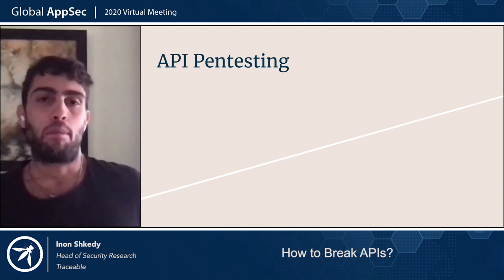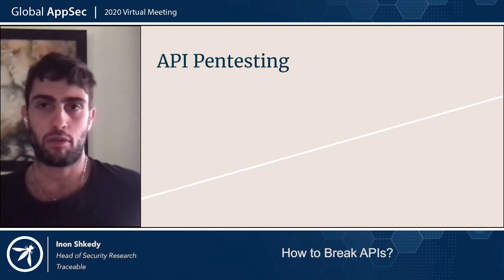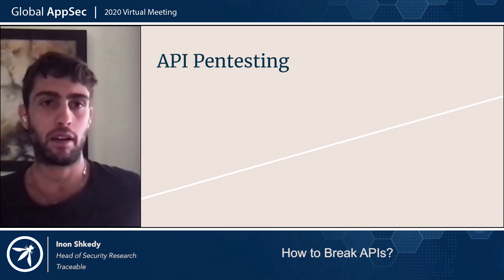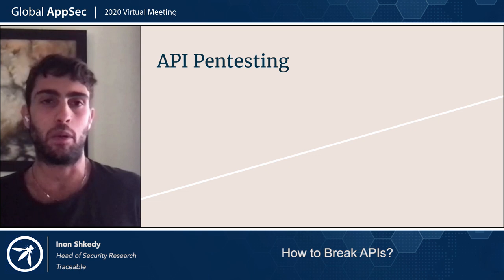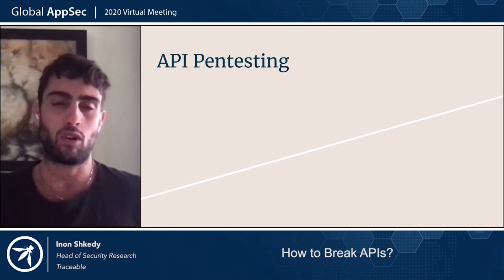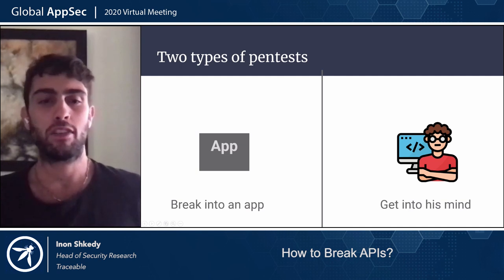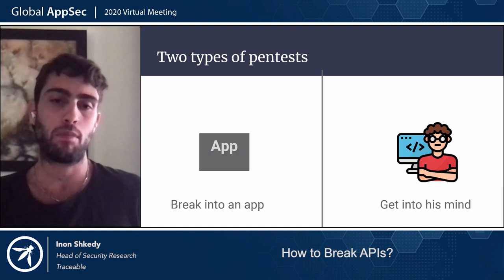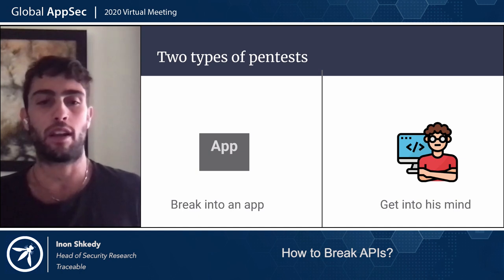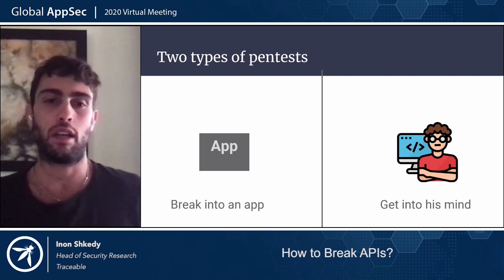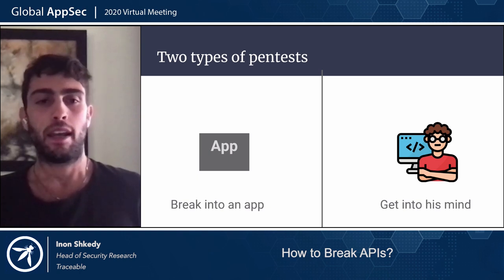I want to talk about API pen testing — this is the main goal of the presentation: to give you ideas and tips on how to perform better API pen testing, and also the required mindset. There are two types of pen tests. The first is more straightforward: you try to break into an application, generate payloads, try to exploit SQL injection and so forth. Sometimes you find a vulnerability, sometimes you don't. This is the simplest approach.